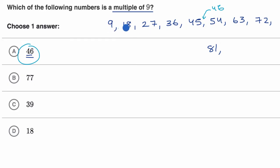Another way to think about it is, for something to be a multiple, if you divide by nine, you're not going to get a remainder. But if you divided 46 by nine, you are going to get a remainder. You're not going to be able to divide nine into it evenly. So I'm going to take that one out of contention.